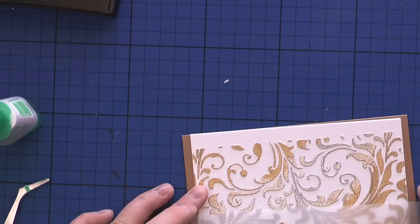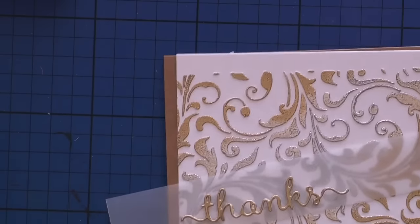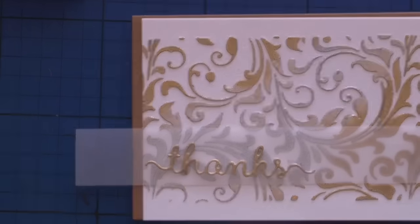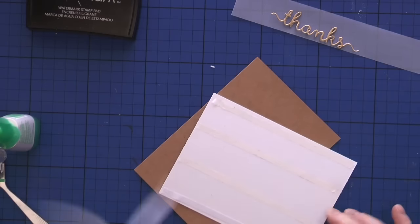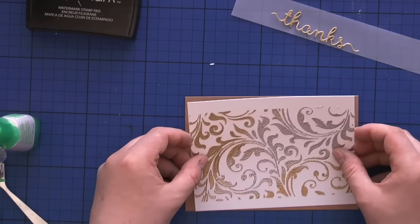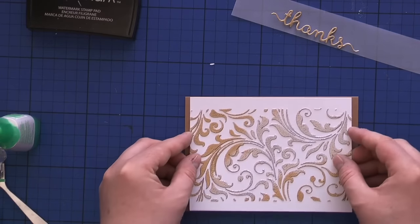I used very thick watercolor cardstock. Now I'm simply going to bend my piece of vellum to go behind my card front. I'm using double-sided tape to adhere my panel and then Tombow Mono liquid glue to adhere my dimensional sentiment.